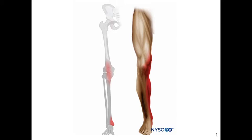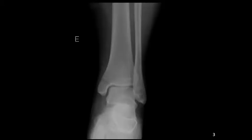The saphenous nerve block provides anesthesia of the medial portion of the lower leg as well as the medial malleolus. It can be useful for deep lacerations of the medial lower leg that require extensive repair procedures, and also for pain control for reduction and splinting of ankle fractures involving the medial malleolus.